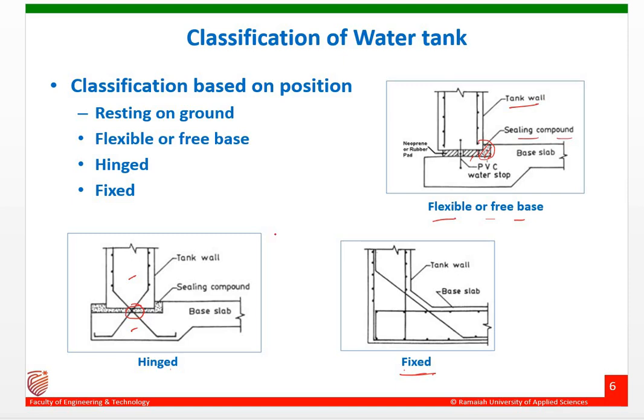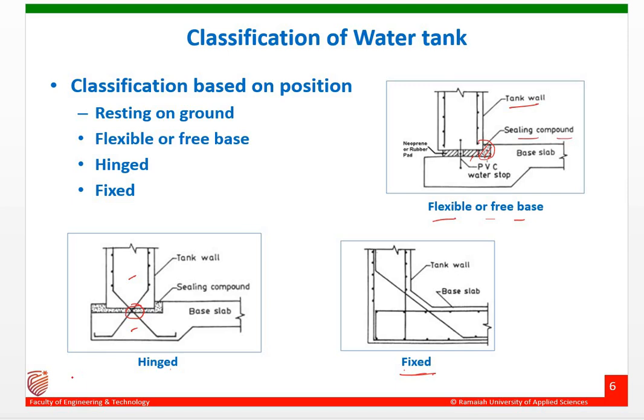That is the classification of the water tank. For a free or flexible base, the walls are free to slide and expand, and the hoop tension developed in the circular wall can be calculated easily from hydrostatic pressure. For hinged and fixed bases, coefficients of moments and ring tension are compiled in Tables 12.7 and 12.10 as recommended in IS 3370, Part 4. These coefficients are expressed as a function of the non-dimensional parameter H squared divided by DT.